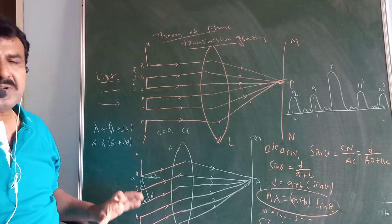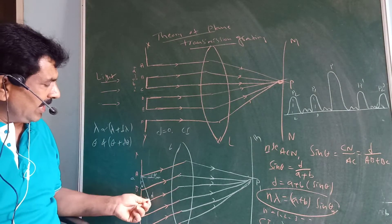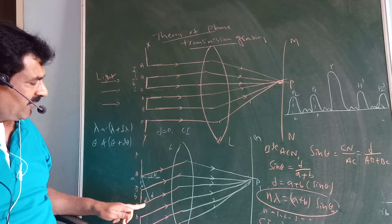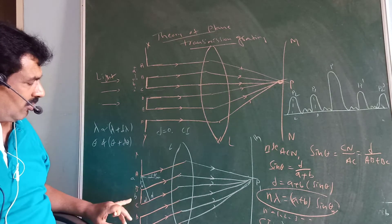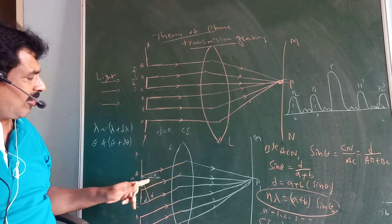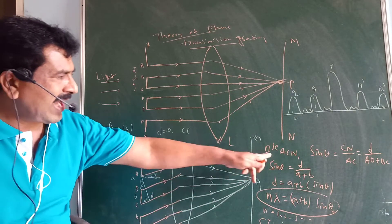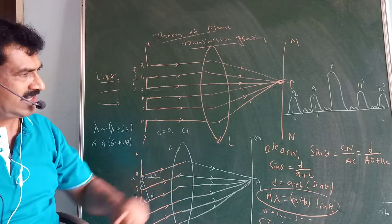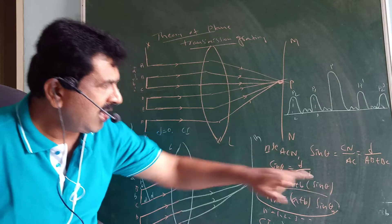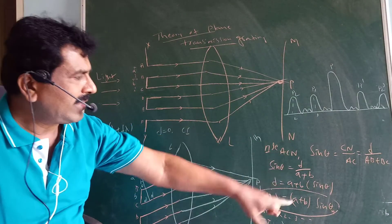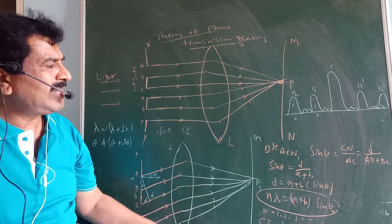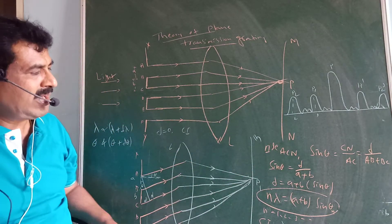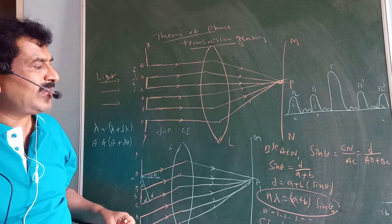The intensity at point P1 on the screen depends upon the path difference. The line AN is drawn perpendicular to the deviated ray. CN represents the path difference delta. Width of the slit AB equals small 'a' and BC equals small 'b'. Theta is the angle of deviation or angle of diffraction. In right-angle triangle ACN, sin theta equals opposite side CN over hypotenuse AC. CN is the path difference delta and AC equals AB plus BC. Therefore, sin theta equals delta divided by (a + b). Taking cross multiplication, we get delta equals (a + b) sin theta.